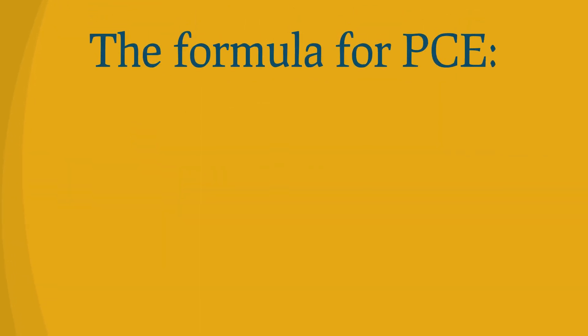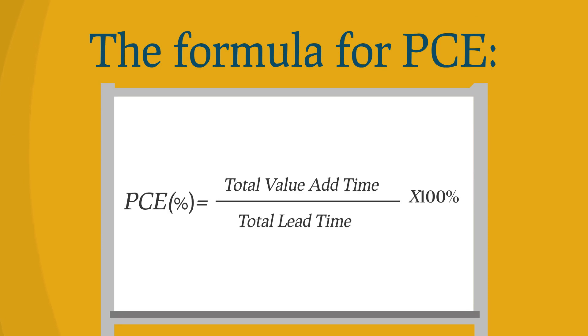Formula for Process Cycle Efficiency: Process Cycle Efficiency equals total value add time divided by total lead time times 100%.